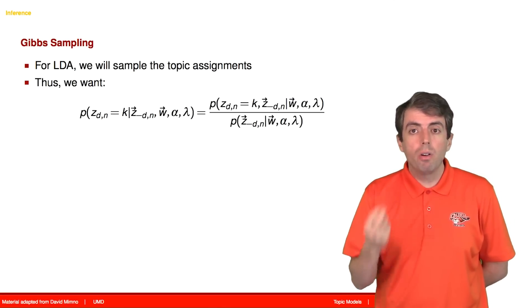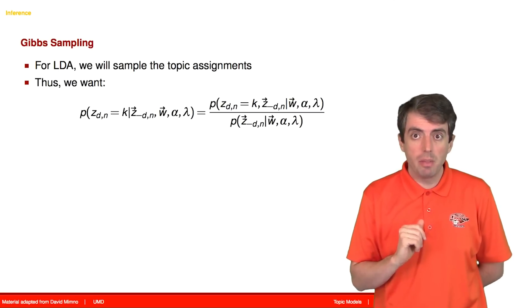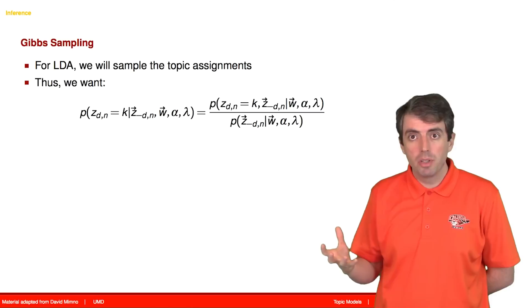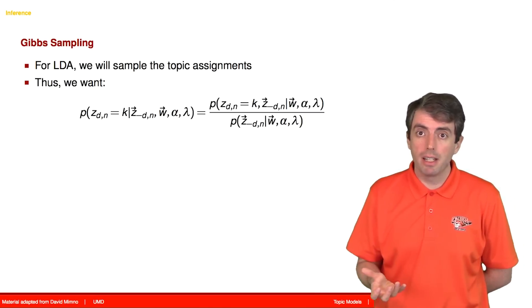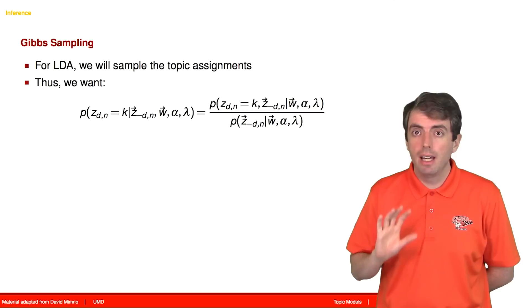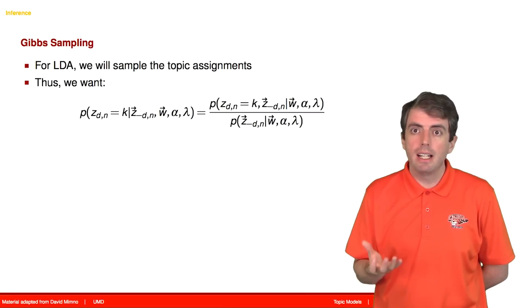And we want to only care about this latent variable. But there are other latent variables in the model. There's the theta, the distribution over topics in a document. And there's the beta, the distribution over words in a topic. We're going to ignore those. And the way that we're going to ignore them is by integrating them out.